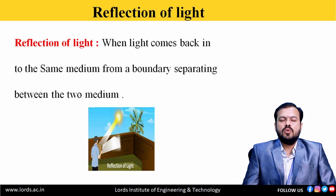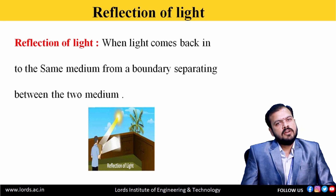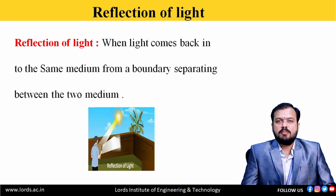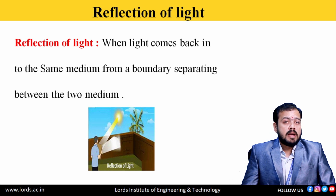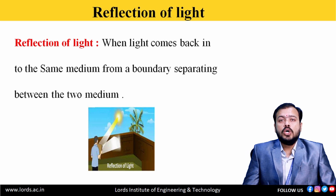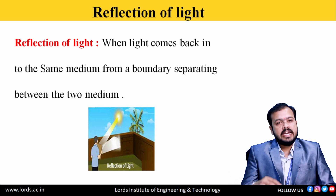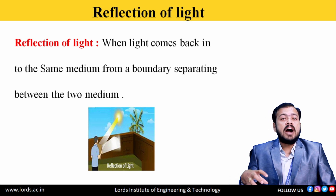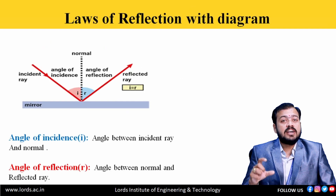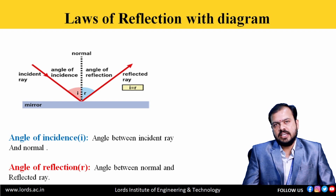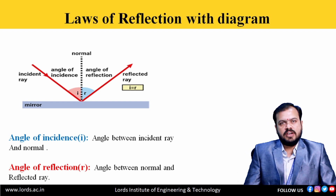Next, Reflection of Light. Reflection of light is nothing but when light comes back into the same medium, after a boundary separating between the two mediums. When a ray of light falls on the surface, that we can call as an incident ray, and when the incident ray bounces back into the same medium after striking the reflecting surface, that we can call as a reflected ray.